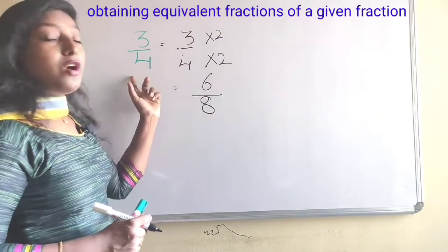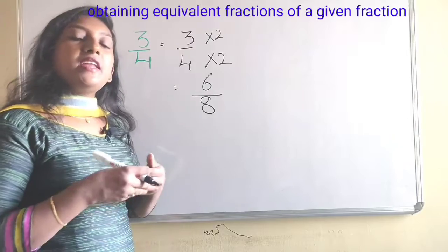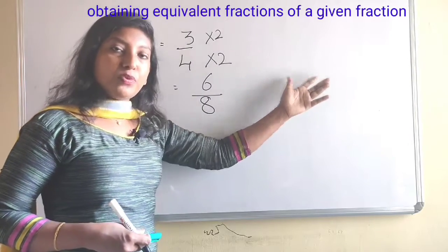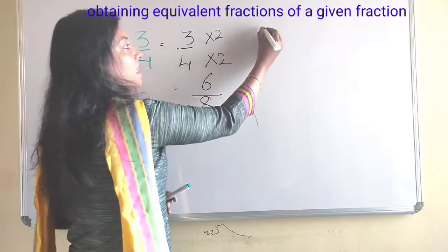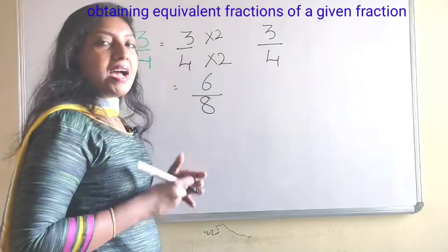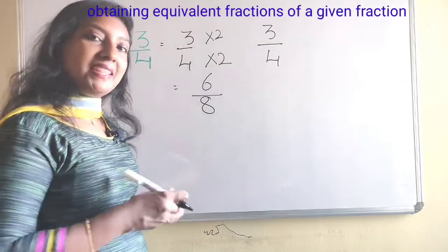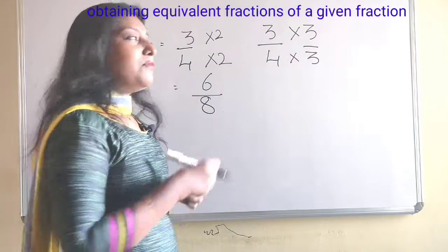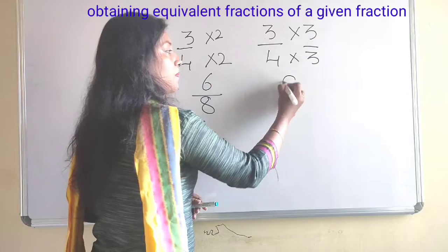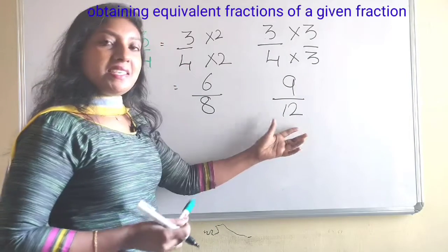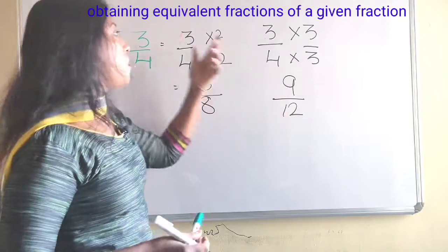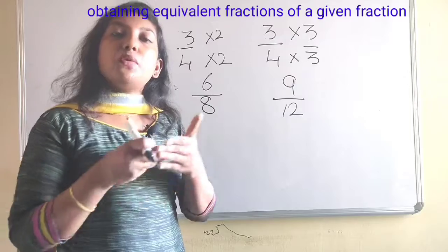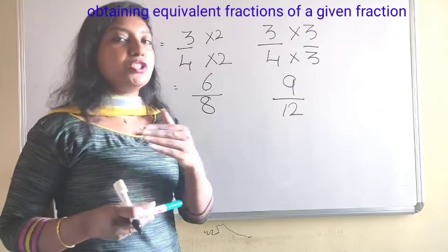3 multiplied by 2 gives 6 upon 4 multiplied by 2 is 8. So 6 by 8 is one of the equivalent fractions of 3 by 4. We can also find the required number of equivalent fractions by using this method. Now I want to find two more equivalent fractions. Here I am taking the same fraction 3 upon 4 and multiplying the numerator and denominator by 3: 3 multiplied by 3 gives 9 upon 4 multiplied by 3 is 12. So 9 by 12 is also an equivalent fraction of 3 by 4.